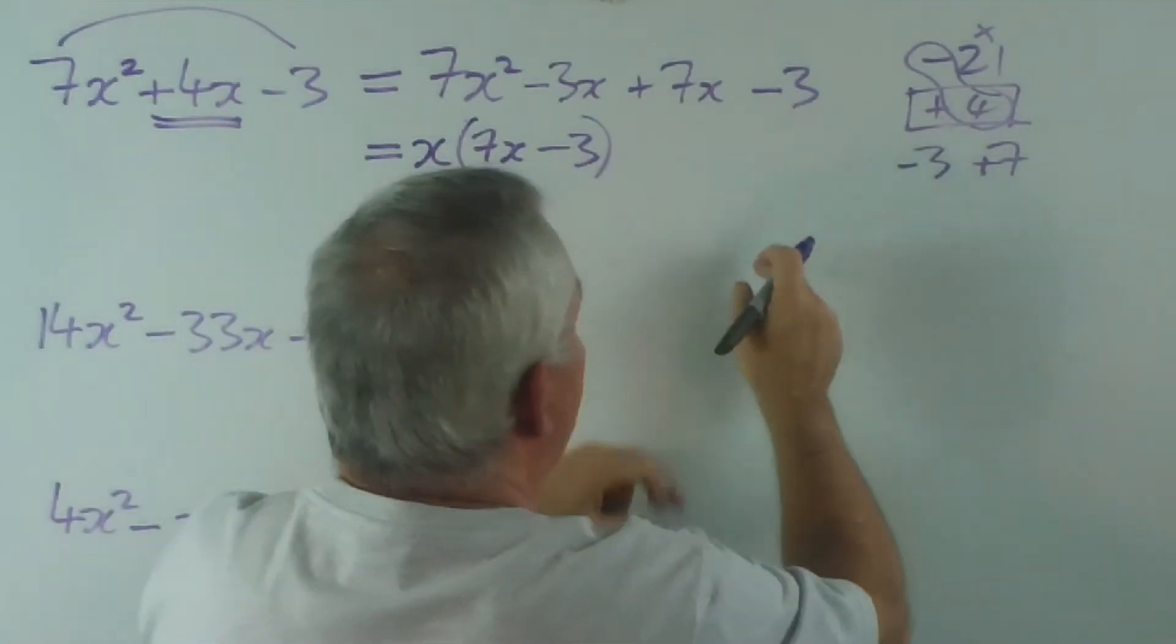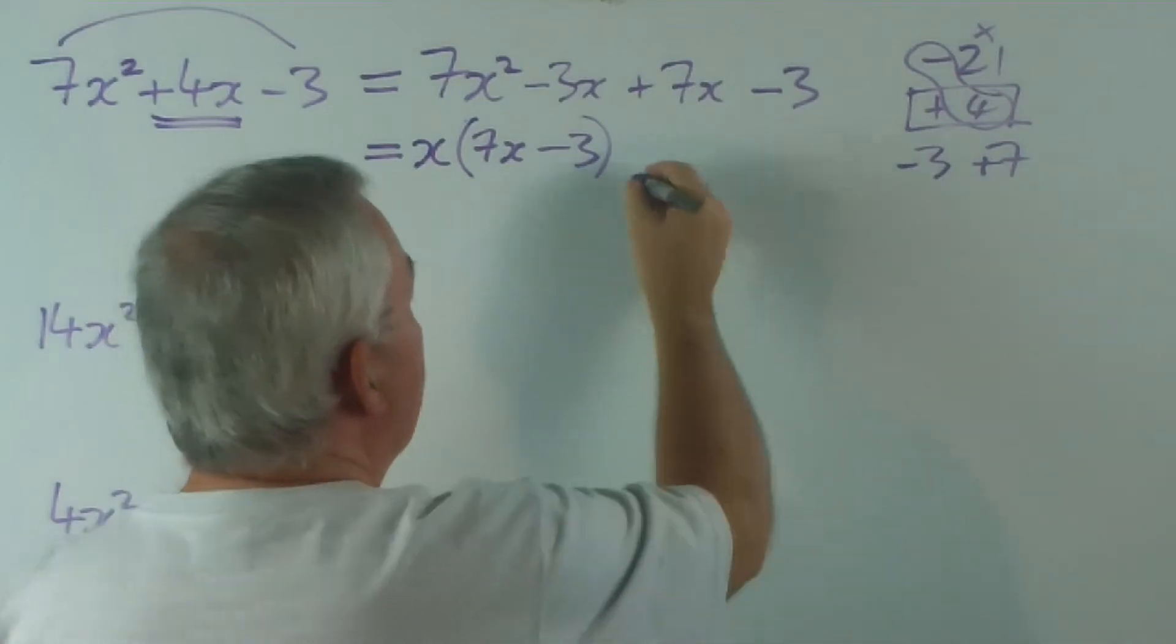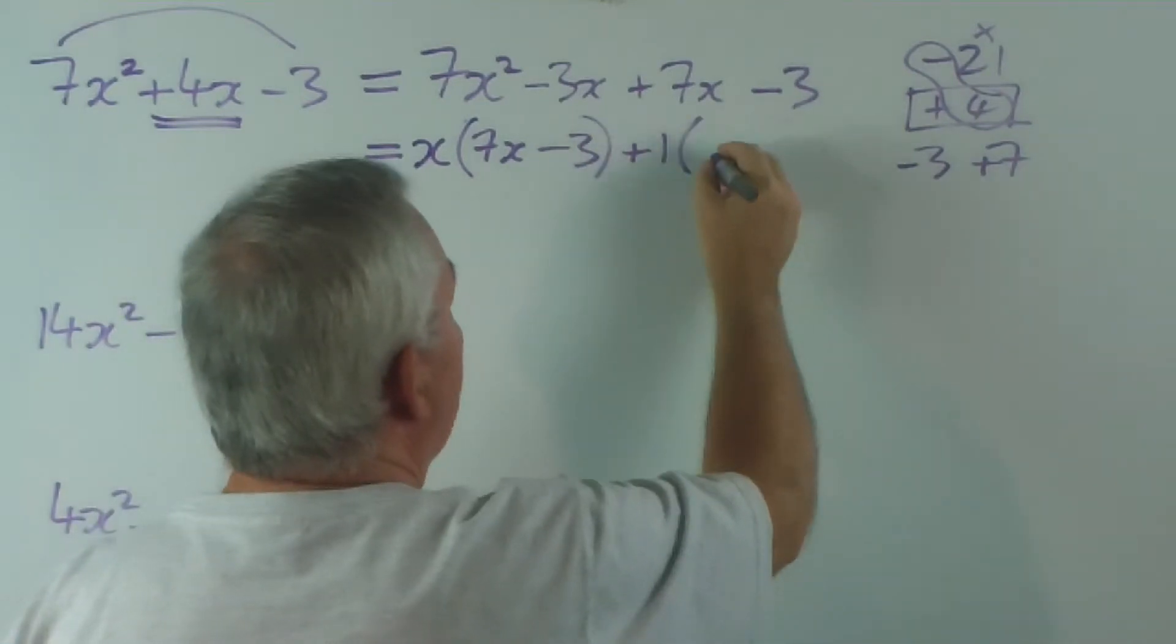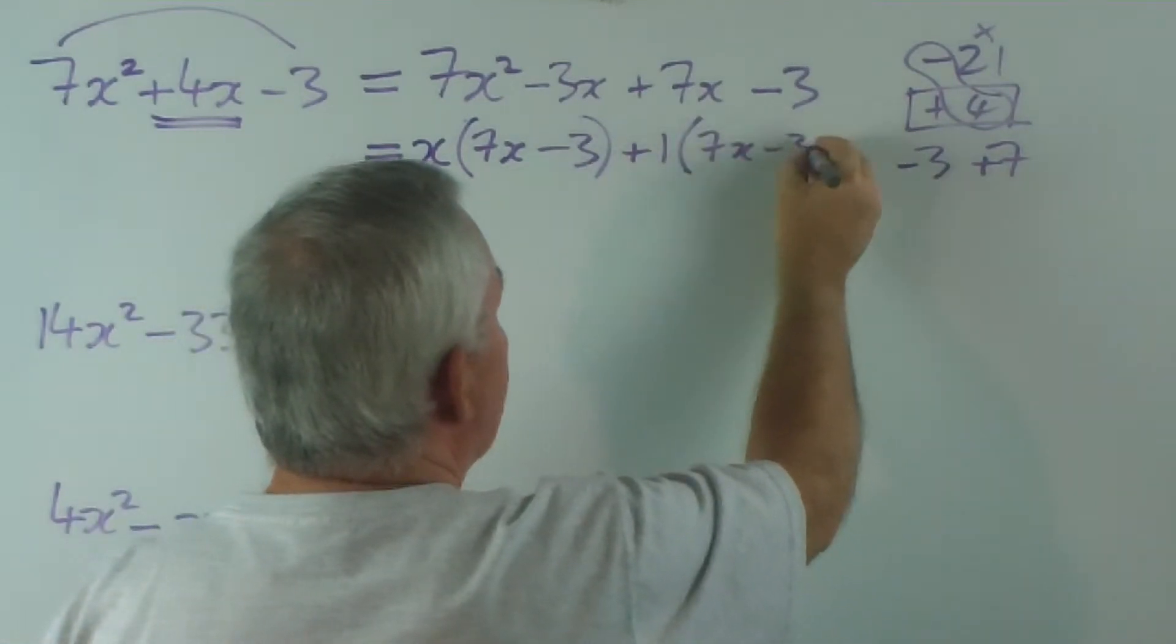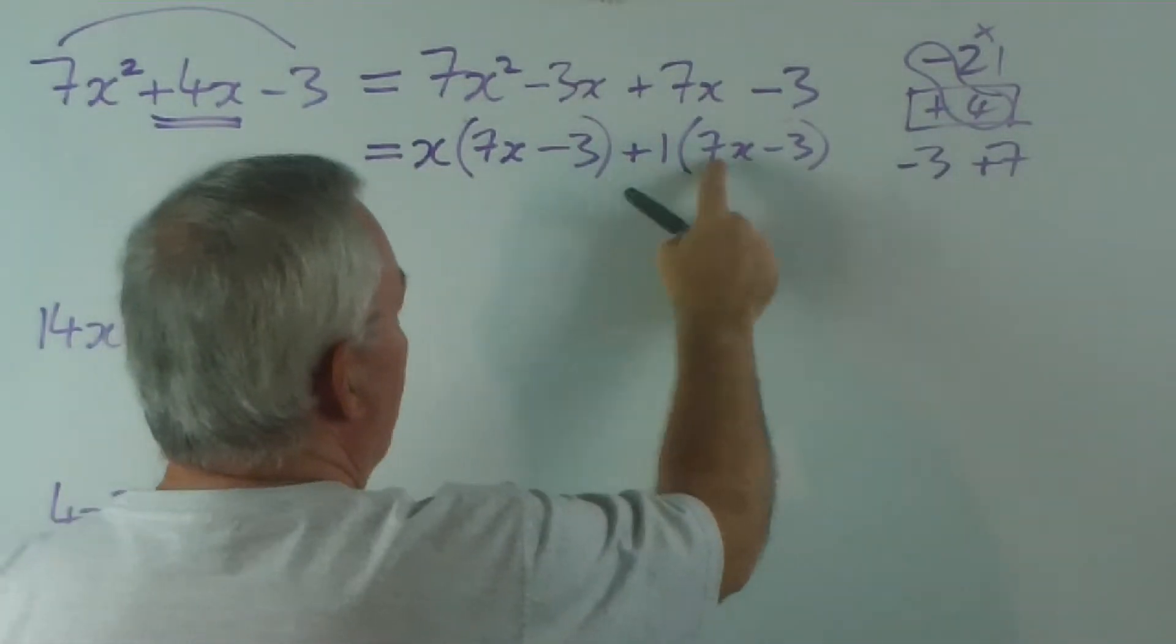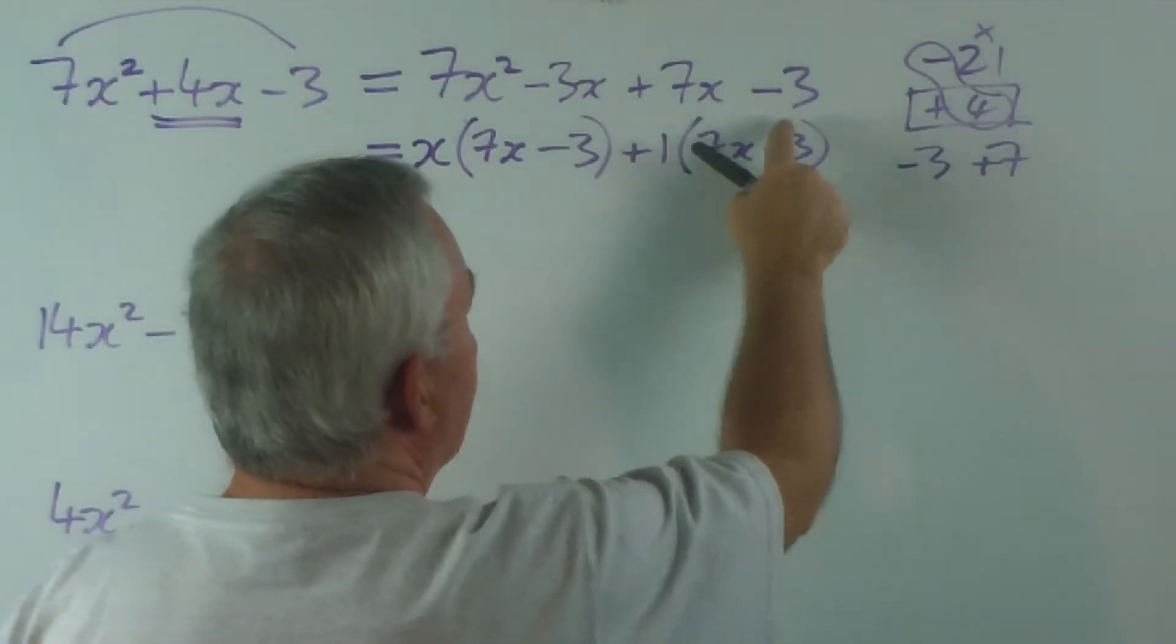And here, there is nothing to take out except for 1. So, I'm going to leave this as plus 1 lot of 7x minus 3. 1 lot of 7x is 7x, 1 lot of minus 3 is minus 3.